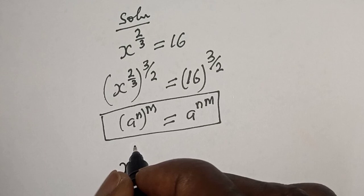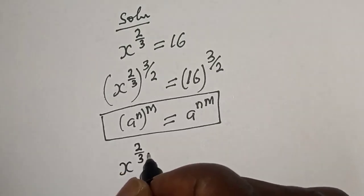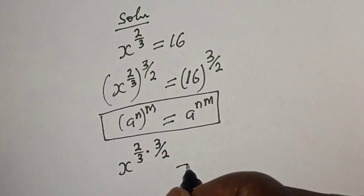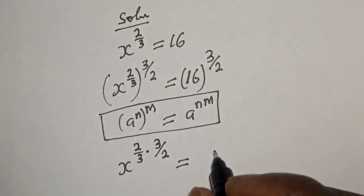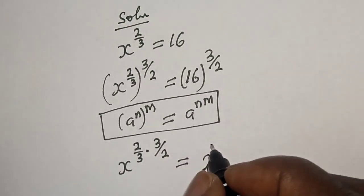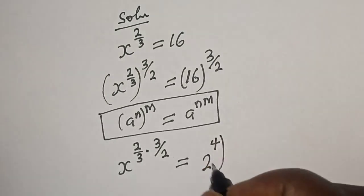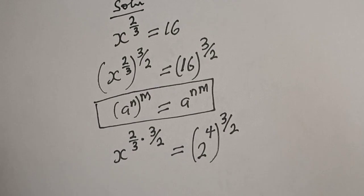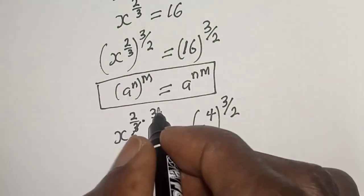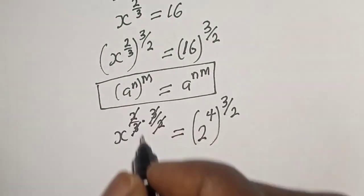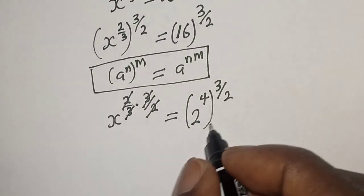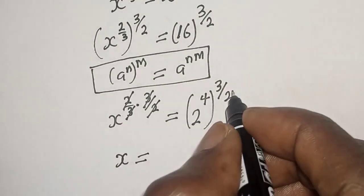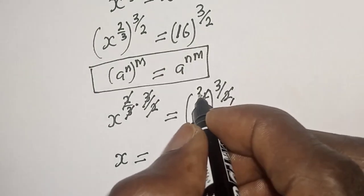x raised to power 2/3 multiplied by 3/2 is equal to 16, which can be written as 2 raised to power 4 to the power of 3/2. This will cancel, and we get x is equal to...